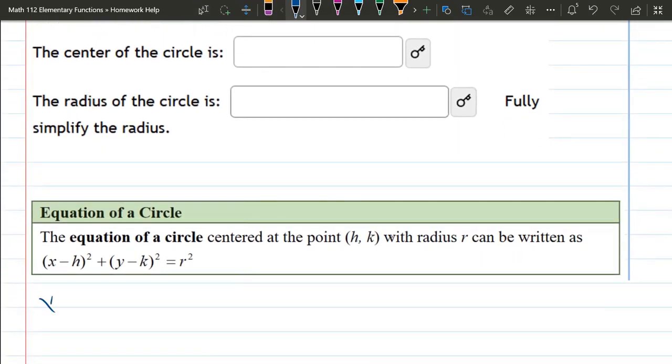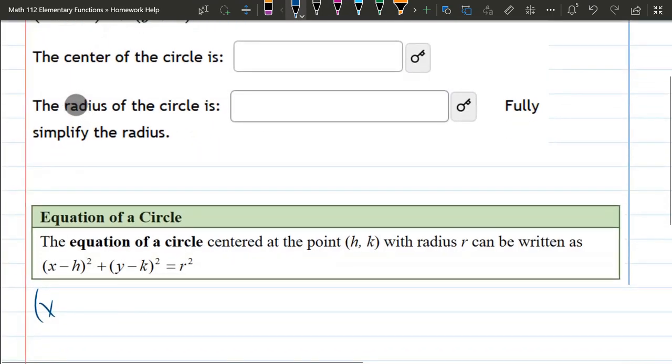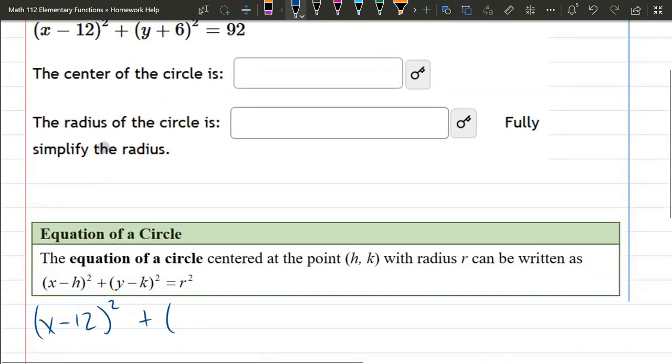So what I'm going to do is rewrite our circle. We have (x - 12)² + (y + 6)² = 92.